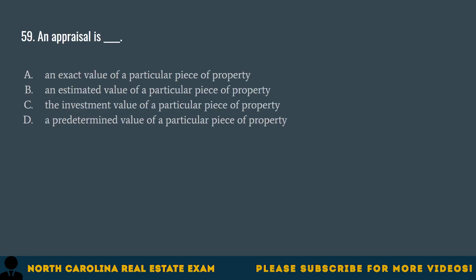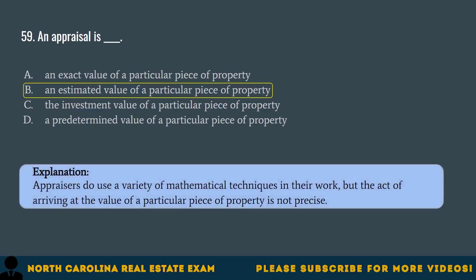Question 59. An appraisal is A. An exact value of a particular piece of property. B. An estimated value of a particular piece of property. C. The investment value of a particular piece of property. D. A predetermined value of a particular piece of property. The correct answer is B. An estimated value of a particular piece of property. Appraisers do use a variety of mathematical techniques in their work, but the act of arriving at the value of a particular piece of property is not precise.